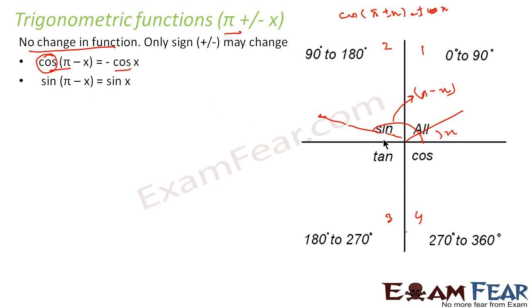For sin(π - x), we know that sin is positive in the second quadrant, so this becomes sin x. The function remains the same. For tan(π - x), tan is negative in the second quadrant, so tan(π - x) = -tan x.